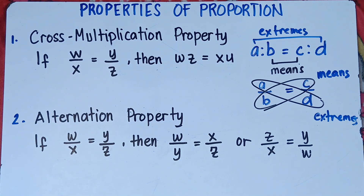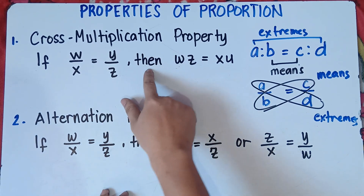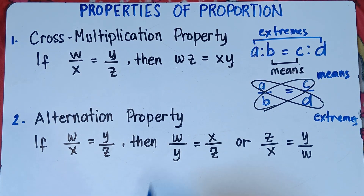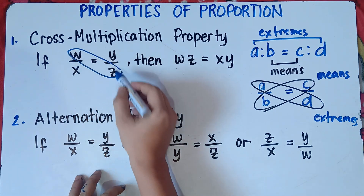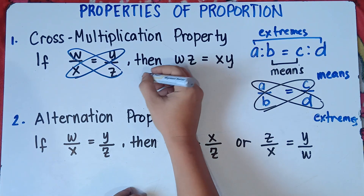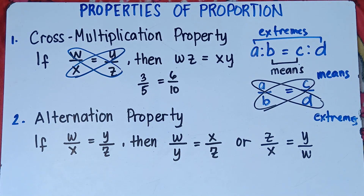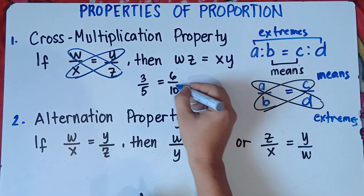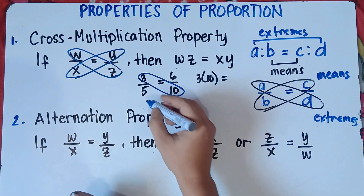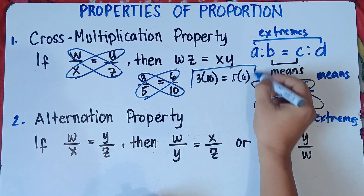In the cross multiplication property — the first property — if W over X equals Y over Z, then WZ equals XY. You simply do the cross multiplication: W times Z gives you WZ, and X times Y gives you XY. For example, if 3 over 5 equals 6 over 10, you apply cross multiplication: 3 times 10 equals 5 times 6.